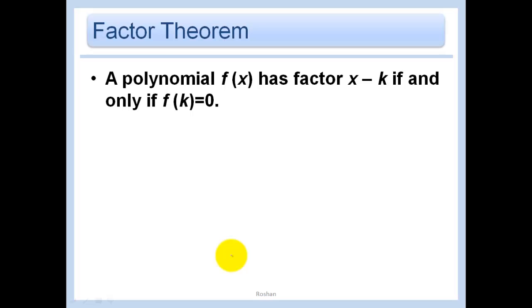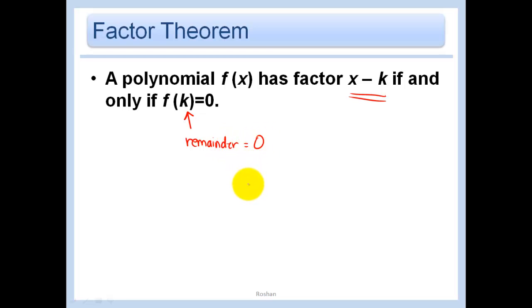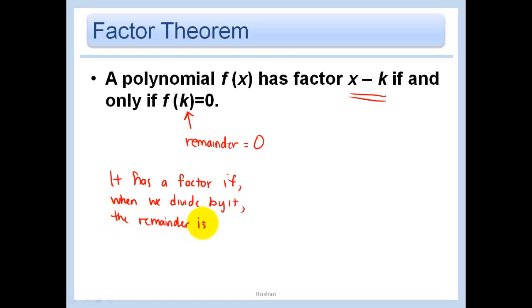The factor theorem states: a polynomial f(x) has a factor (x minus k) if and only if f(k) equals 0. We just learned the remainder equals f(k), so this means the remainder equals 0. A factor is simply something we can divide by without getting a remainder — that's all a factor is. So a polynomial has a factor (x minus k) when dividing by it yields a zero remainder.